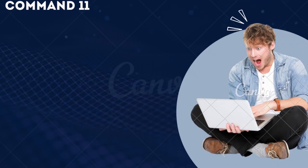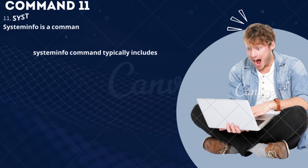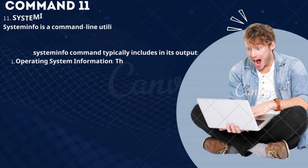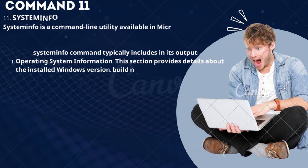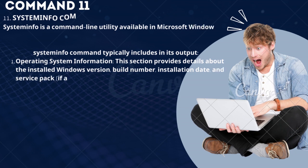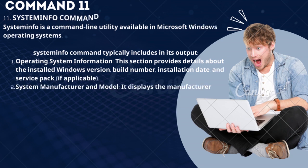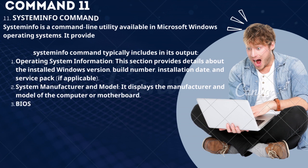Command 11: System Info. System Info is a command-line utility available in Microsoft Windows operating systems. It provides detailed information about the computer's hardware and software configuration.